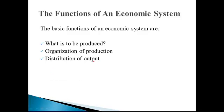Third function of an economic system is how output is distributed among the individuals and households — how income should be distributed among different factors of production. For example, labor को कितने wages देनी चाहिए, capital को कितना interest देना चाहिए, और land का क्या rent होना चाहिए — ये सब हम distribution of output में discuss करते हैं.